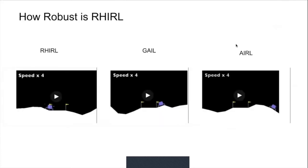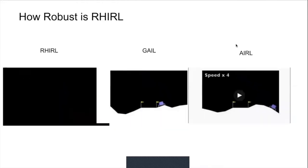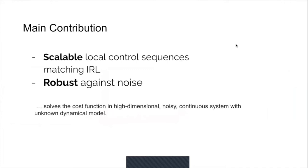Next, we evaluated RH-IRL under control noise by supplying the same control noise to all learning environments. We find that RH-IRL can still learn a reasonable cost function and thus generate a good policy, while GAIL and AIRL are unable to output reasonable actions in the presence of control noise. In conclusion, RH-IRL is a scalable and robust algorithm that learns the cost function from expert demonstrations for high-dimensional, noisy, and continuous systems, and our experiments show that it outperforms state-of-the-art IRL algorithms on several benchmark tasks.